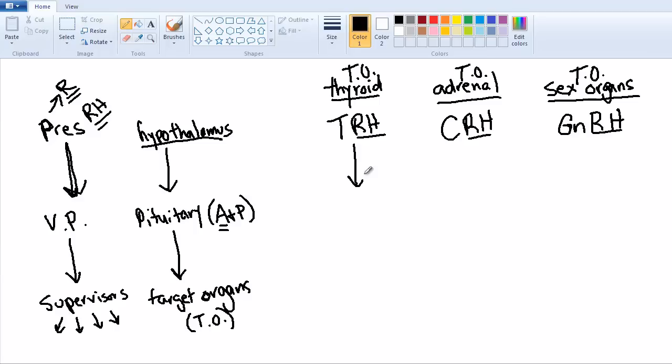Then the next hormone here is going to be thyroid stimulating hormone coming out of the anterior pituitary. For the adrenal gland, it's going to be adrenocorticotropic, the T for tropic hormone. And here we're going to have two. We're going to have FSH and we are going to have LH, also coming out of the anterior pituitary. Again, follicle stimulating hormone and luteinizing hormone.